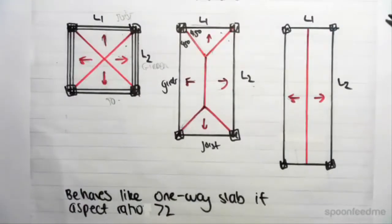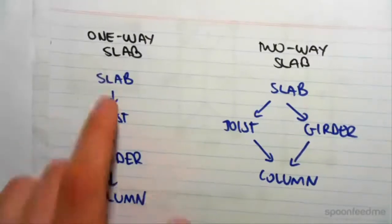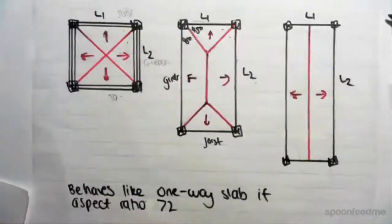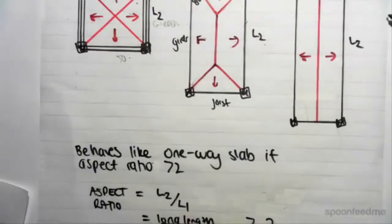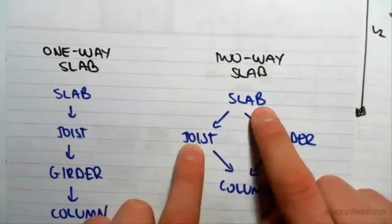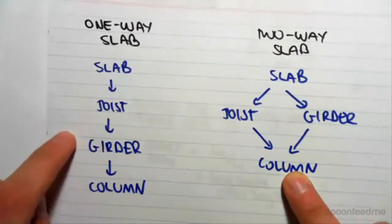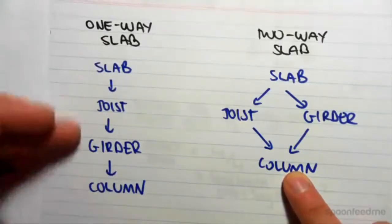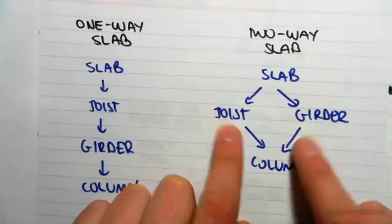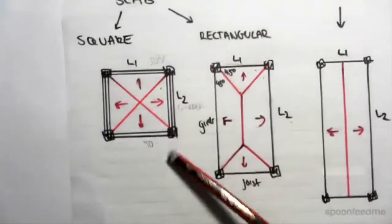For a one-way slab the load path goes: slab, joist, girder, column. This exists in the first structure for sure, and potentially in the second structure if the aspect ratio is greater than two. If the aspect ratio is less than two, it behaves like a two-way slab. In a two-way slab, a portion of the slab load goes to the joists and a portion goes directly to the girders, and then they both feed into the column — in contrast to the linear one-way path.